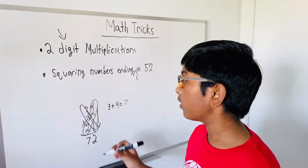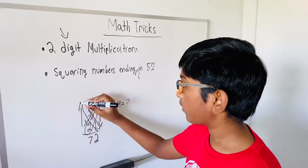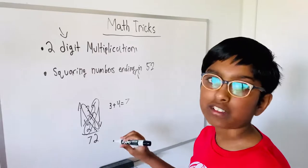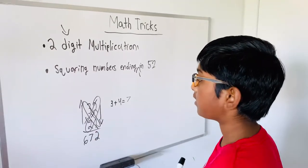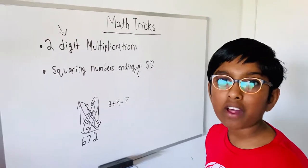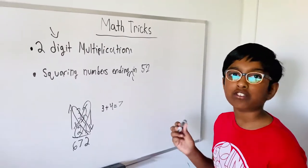Now we need to do three times two, which is six. So we write six here. So 32 times 21 is 672. Now let's do another one and I'm going to tell you guys to solve this one.